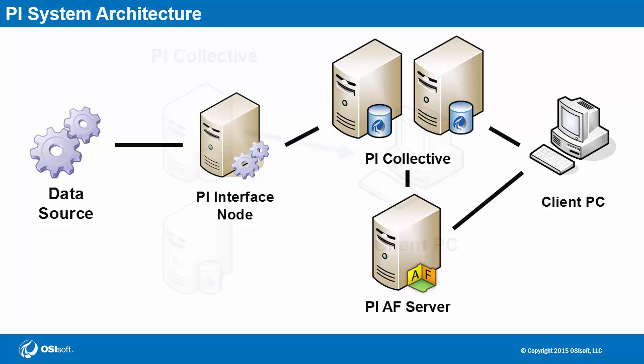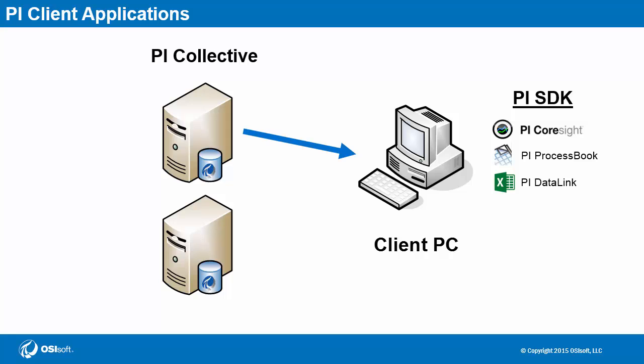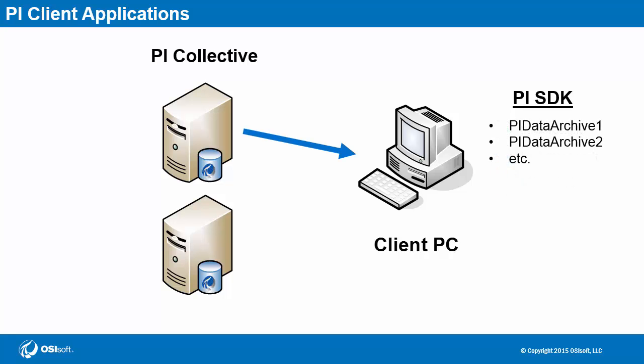Let's turn our focus briefly to the end users. They utilize PI client applications to retrieve and view data. These include PI CoreSite, PI ProcessBook, and PI DataLink. All of these PI client tools are built on a PI system platform called PI SDK. When a PI client application connects to the PI collective, PI SDK recognizes this and retrieves a list of all the members in the PI collective. When an issue arises between a PI client tool and its connected PI collective member, PI SDK automatically switches over to a different available member.